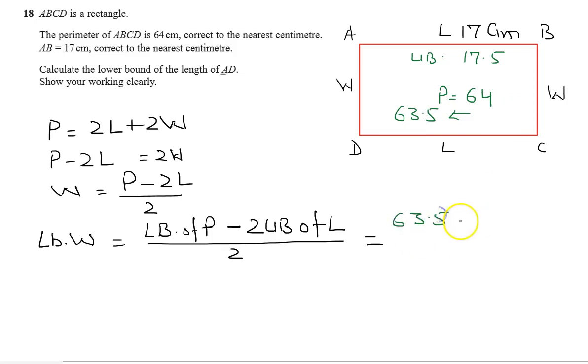So let's use this: 63.5 minus 2 multiply by 17.5 over 2. So the answer will be 14.25. The length of AD is 14.25 in terms of the lower bound.